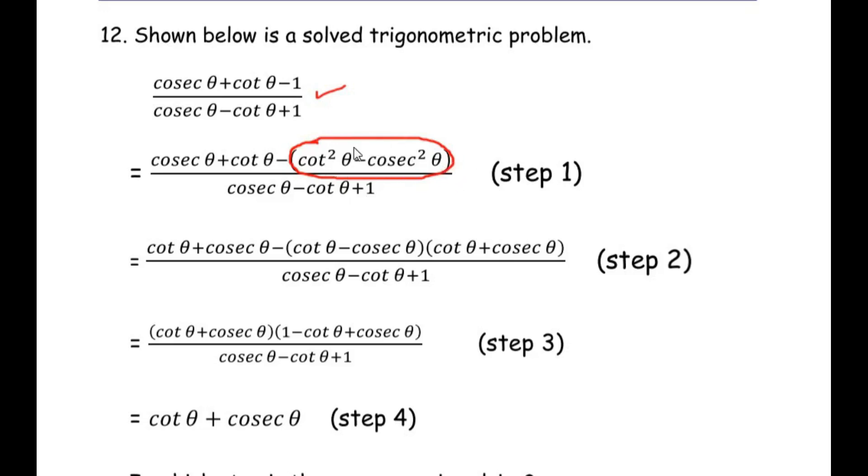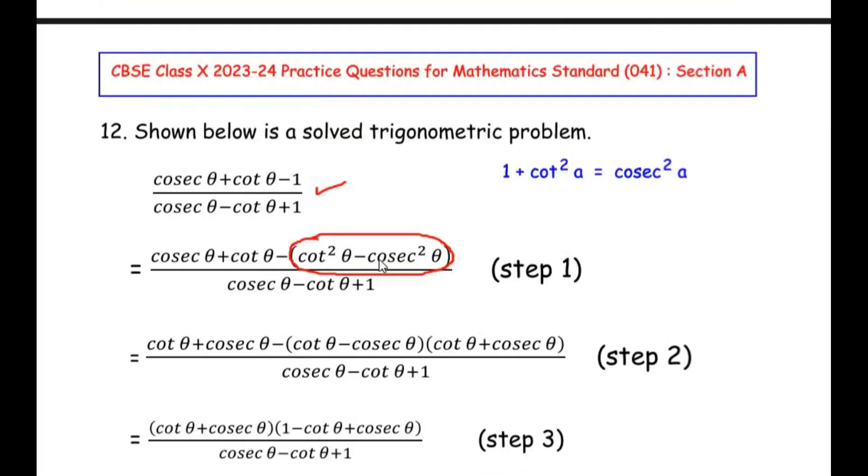Now this is nothing but one of the trigonometric identities. Now let me write down the trigonometric identity which resembles this one. Now this is the identity they have used, that is 1 plus cot square of a, a is nothing but any angle, in place of theta I have taken as a, is equal to cosec square a.